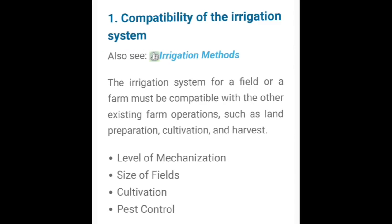First one: compatibility of the irrigation system. The irrigation system for a field or a farm must be compatible with the other existing farm operations such as land preparation, cultivation, and harvest.